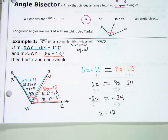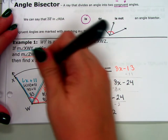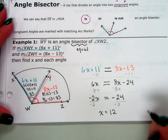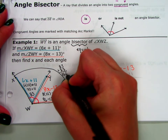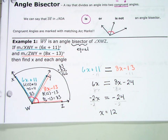The problem says find x and each angle. Am I done? No — I'm missing angle XWZ, the whole angle. That's 83 plus 83, which is 166 degrees. Now I'm done. The only geometry in that whole picture is setting up the equation using the bisector. Everything else is just Algebra 1.